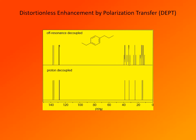Recording proton-decoupled and off-resonance decoupled carbon-13 NMR spectra to determine the number of protons attached to each carbon is sometimes useful, but it has serious limitations. In most complex molecules it is pretty useless because of the overlap of signals. In this example — para-ethylpropylbenzene — signals overlap, particularly the two signals to the right of the methyl groups and some aromatic signals. This is an idealized spectrum; in the actual spectrum it is very difficult to determine the multiplicity. For that reason, a much better and more accurate technique has been developed.